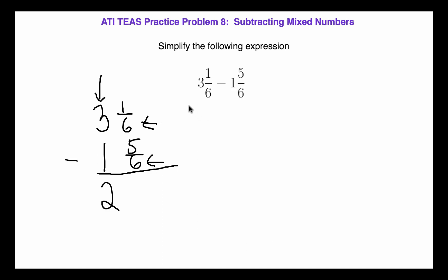So when this happens, we have to do something called converting to improper fractions. We've got to change 3 and 1/6 to a fraction, and we have to change 1 and 5/6 from a mixed number to a fraction.